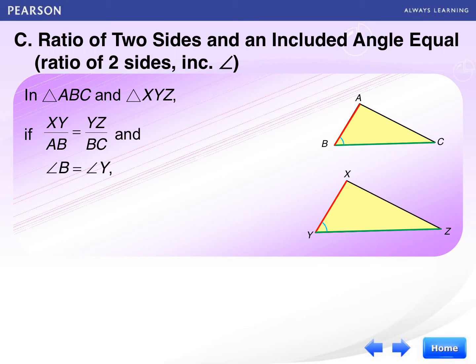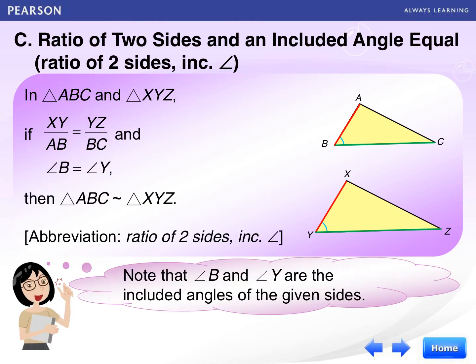And the included angle of the two triangles are equal, which is angle B equals to angle Y. In this case, then the two triangles can be set as similar. Triangle ABC is similar to triangle XYZ. The reason is written as ratio of two sides and included angle.